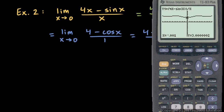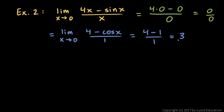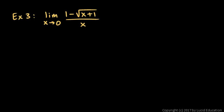Here's another example: the limit as x approaches 0 of (1 minus the square root of (x plus 1)) over x. If we substitute 0 for x, we get 1 minus the square root of 0 plus 1, which is 1, over 0 — that's 0 over 0, an indeterminate form.